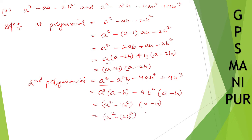So the second polynomial factors as (a plus b)(a minus b)(a plus 2b) — wait, that gives (a plus 2b)(a minus 2b)(a minus b), which are the three factors of the second polynomial.